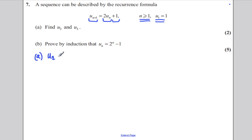U2, by this, must be two lots of U1 plus one, which is two lots of one plus one, which is equal to three. And U3 must be two lots of U2 plus one, which is two lots of three plus one, which is seven. Show your working like that to get yourself the two marks. Very easy.